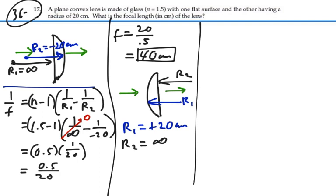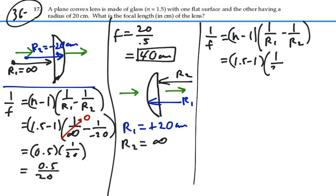So if I applied the lens maker equation to this, 1 over f is equal to n minus 1, 1 over r1 minus 1 over r2, this would be equal to 1.5 for glass minus 1, 1 over 20 minus 1 over infinity.